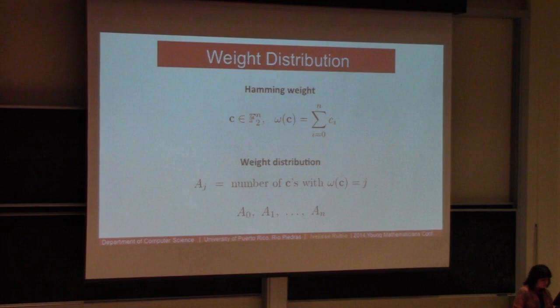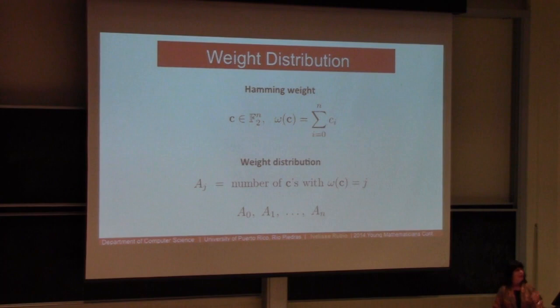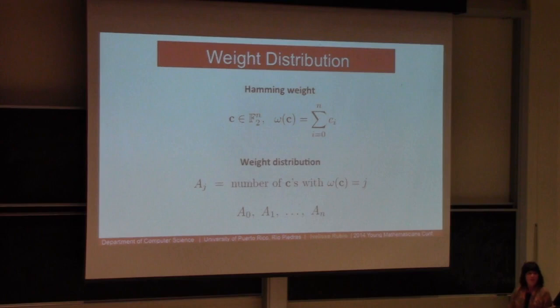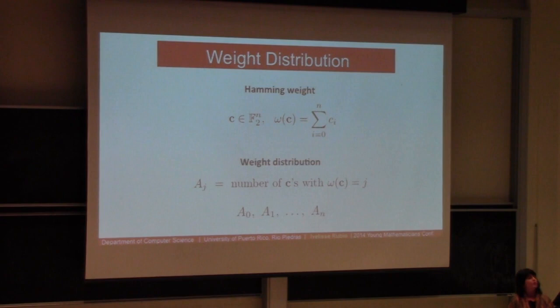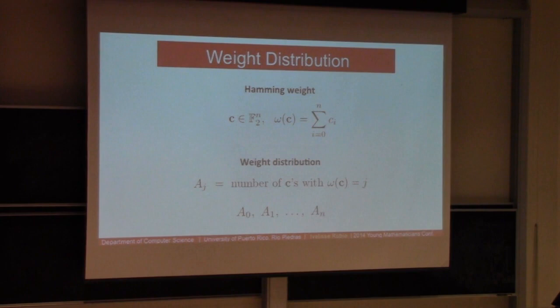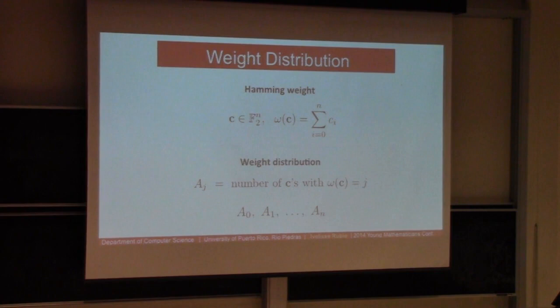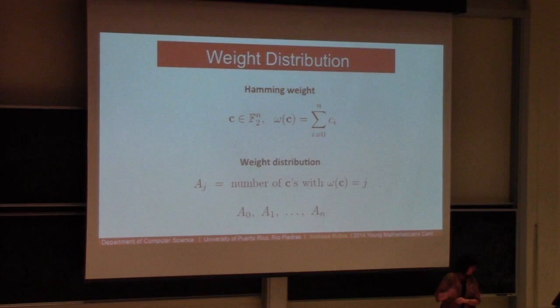Two properties of codes related to our work are the covering radius and the weight distribution. For both we need the concept of Hamming weight. The Hamming weight of a vector counts the number of entries different from zero — for binary vectors of 0s and 1s, that's the same as adding the entries. The weight distribution of a code counts how many code words are of each weight from 0 to n.